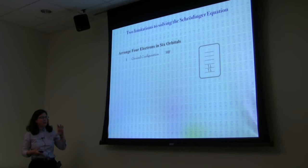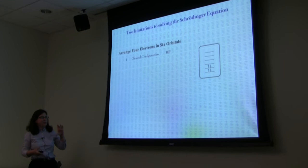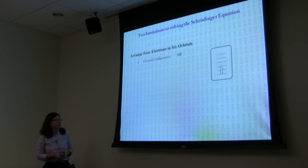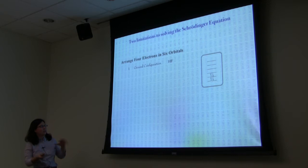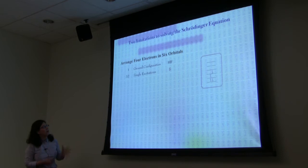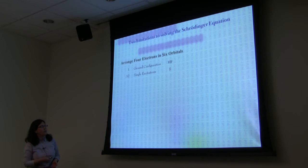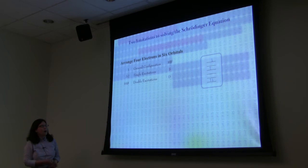Imagine you have a system that has only four electrons, and we're going to restrict the number of orbitals to six — looking at how many ways you can arrange four electrons in six orbitals. This is your Hartree-Fock ground state: two electrons in each level. If you allow single excitations, you get 32 of those. If you consider double excitations, you get a lot more.